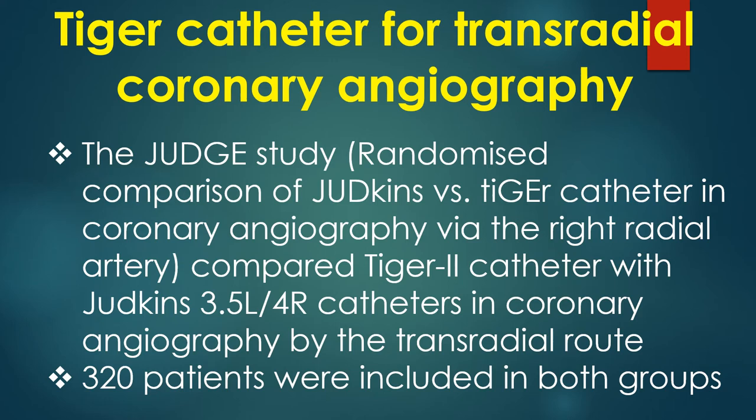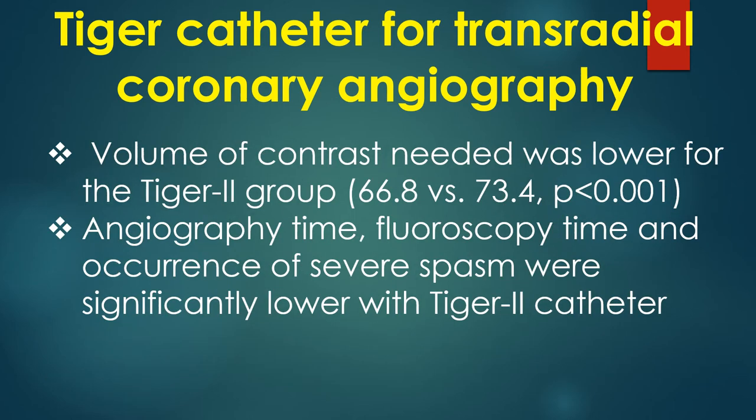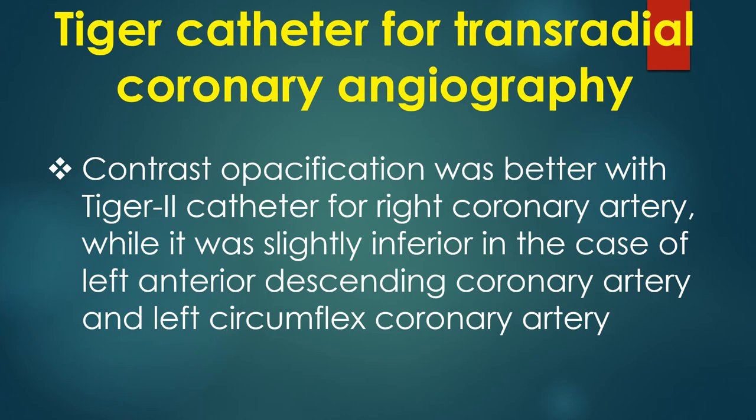320 patients were included in both groups. Volume of contrast needed was lower for the TIGER II group. Angiography time, fluoroscopy time, and occurrence of severe spasm were all significantly lower with the TIGER II catheter.